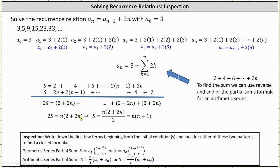To solve for s, we divide both sides by 2 which gives us the sum is equal to n times the quantity n plus 1. Which means you can write a sub n as a sub n equals 3 plus n times the quantity n plus 1 or a sub n equals n squared plus n plus 3.